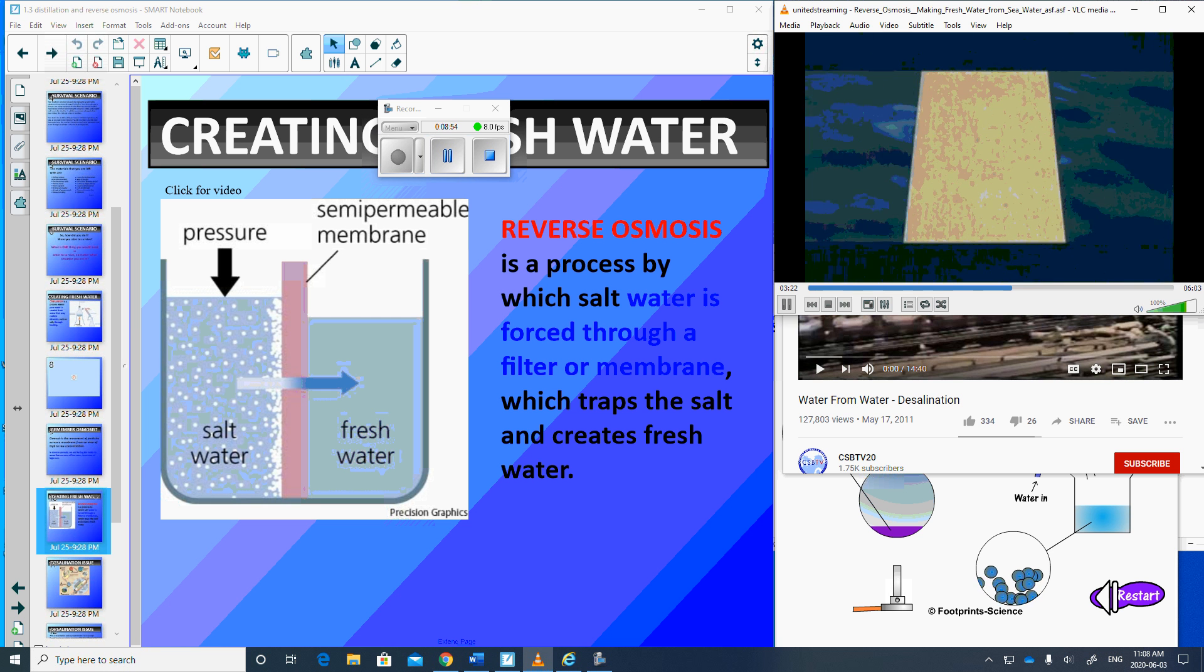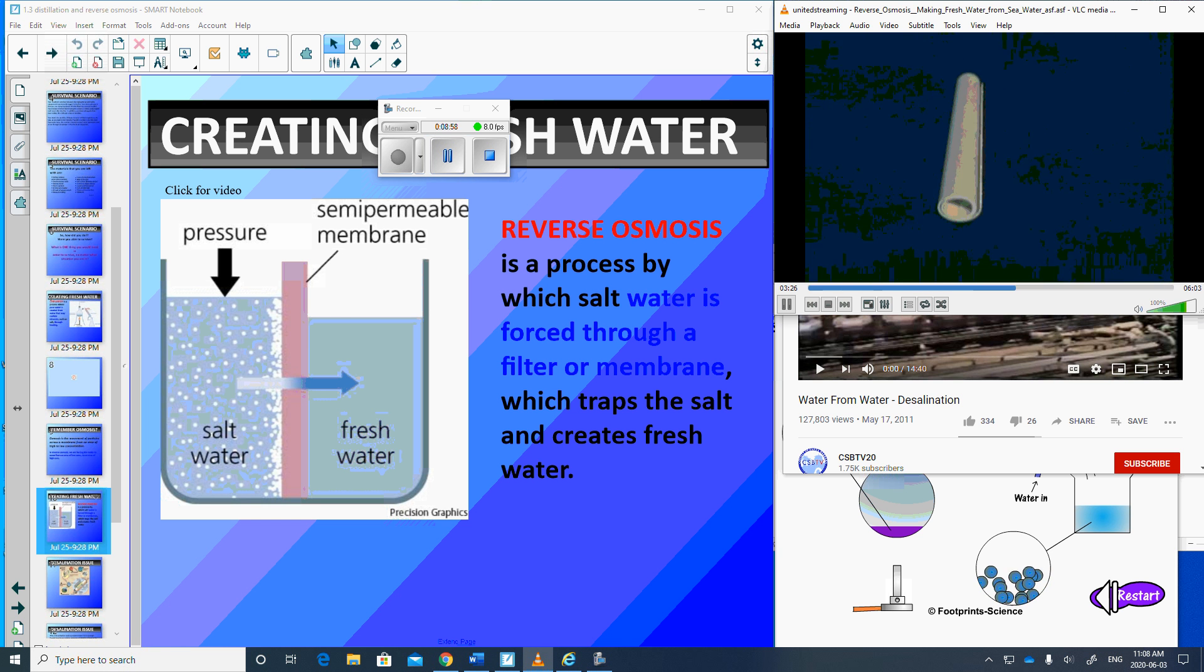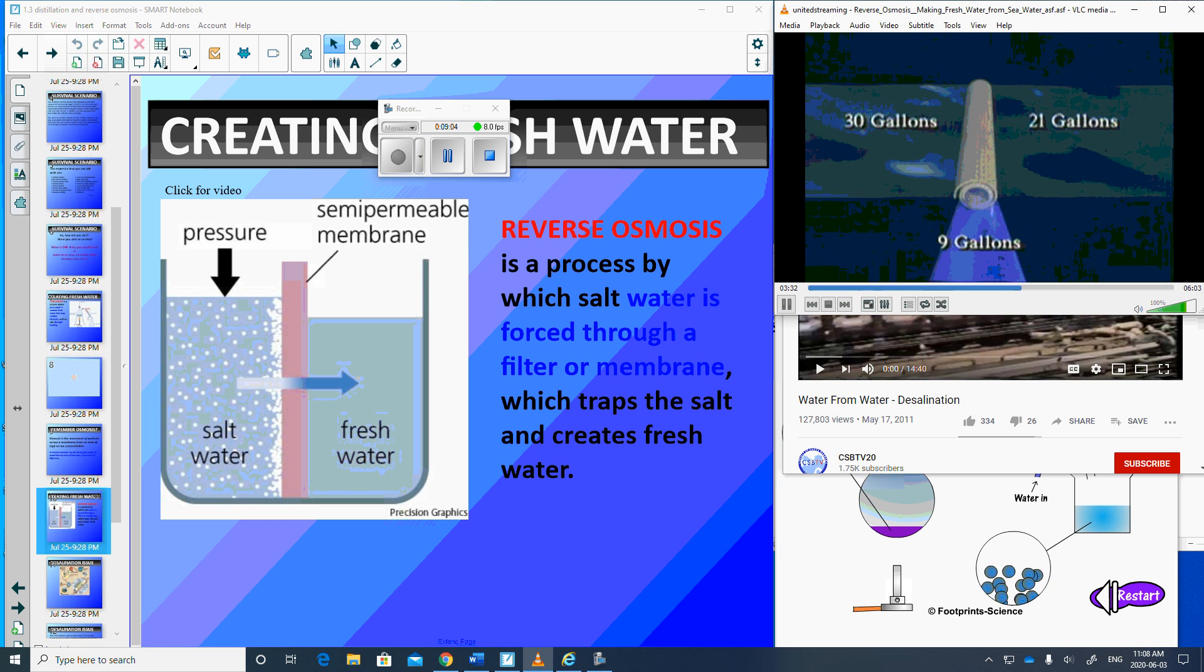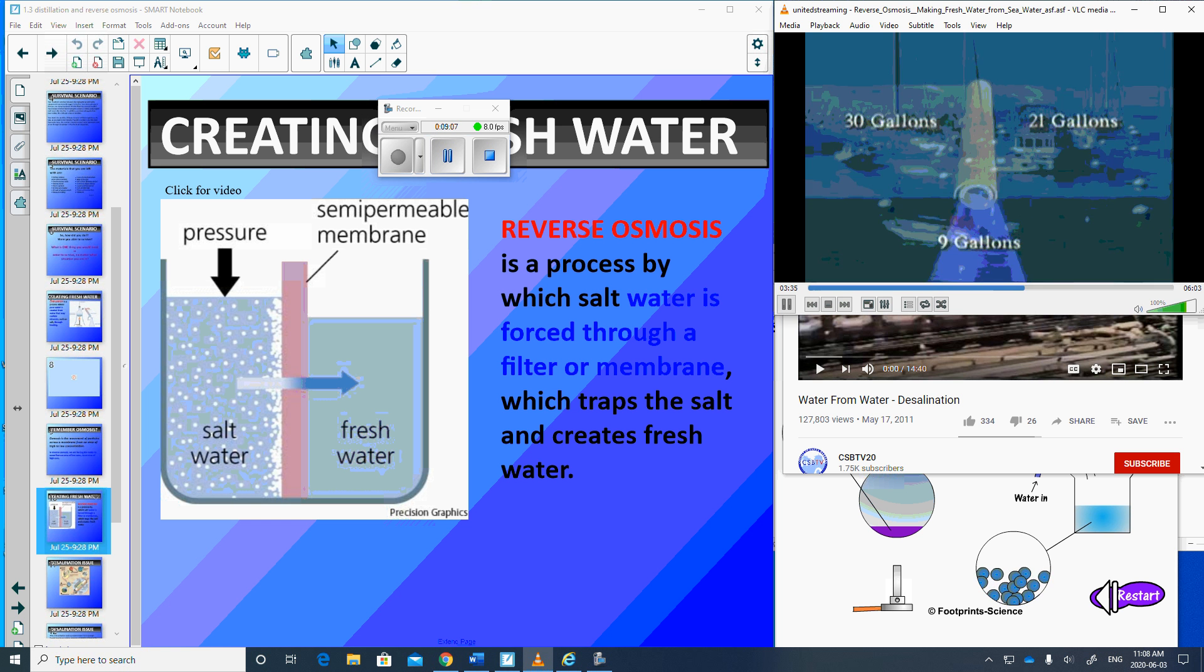A semi-permeable membrane is a synthetic material with microscopic perforations, little holes in it. It filters out salt, bacteria, and viruses. For every 30 gallons of seawater in, 9 gallons of drinkable water come out. The rest is pumped back into the sea, uncontaminated by heat or chemicals.